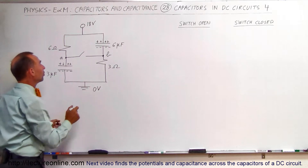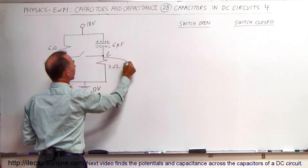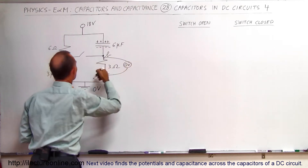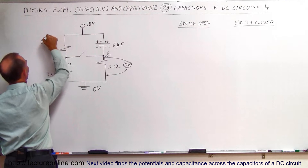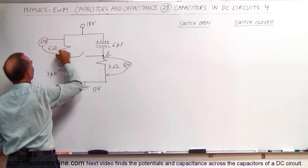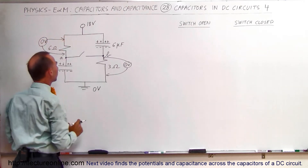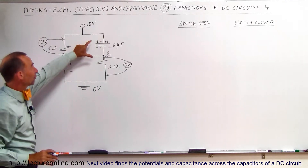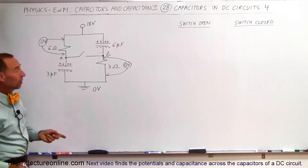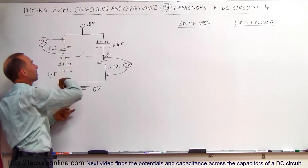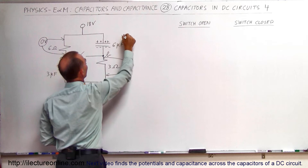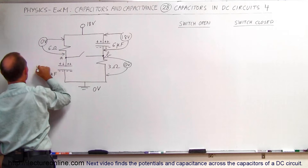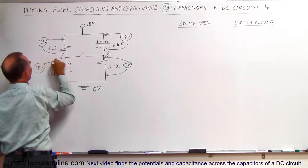At that point there will be zero volts across the left resistor because there is no current through it, and zero volts across the right resistor because there is no current flowing through it either. That means all the voltage will be across both capacitors — 18 volts across that one and 18 volts across that one — because the potential difference from one end to the other must be 18 volts.